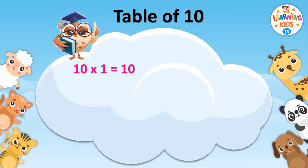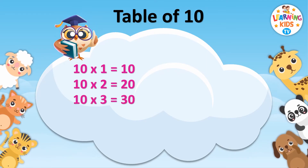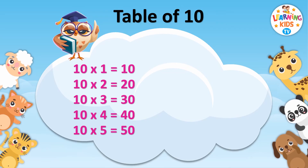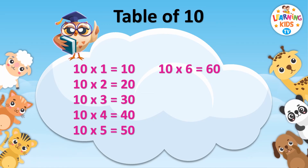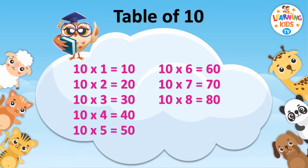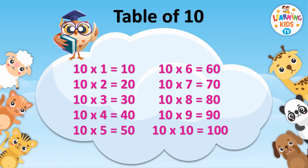Ten threes are thirty. Ten fours are forty. Ten fives are fifty. Ten sixes are sixty. Ten sevens are seventy. Ten eights are eighty. Ten nines are ninety. Ten tens are one hundred.